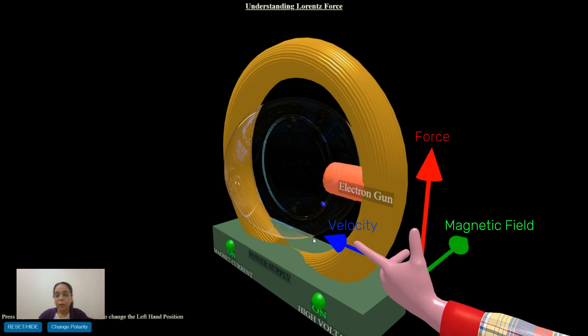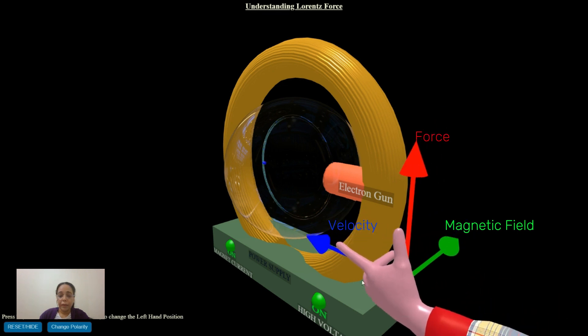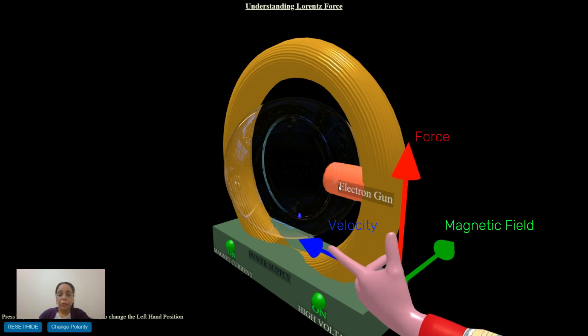Now the force which acts is perpendicular to both the velocity of the electron and the magnetic field direction. Here it is in the upward direction represented by this red arrow, and the electrons are now moving in an anti-clockwise direction.